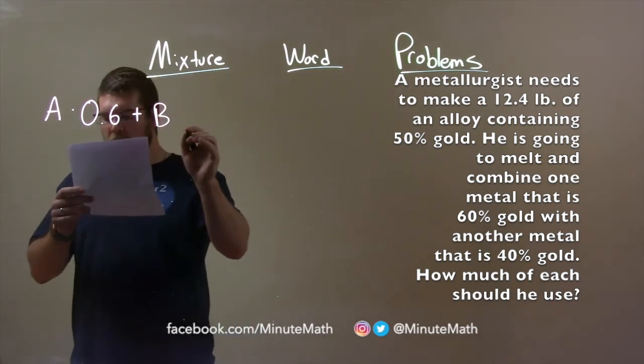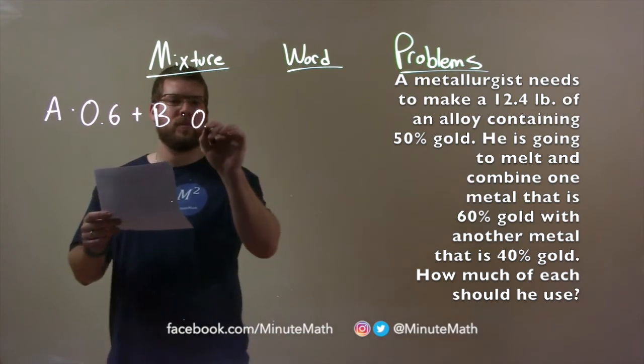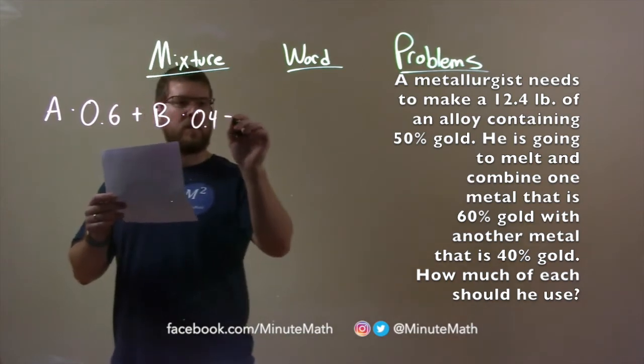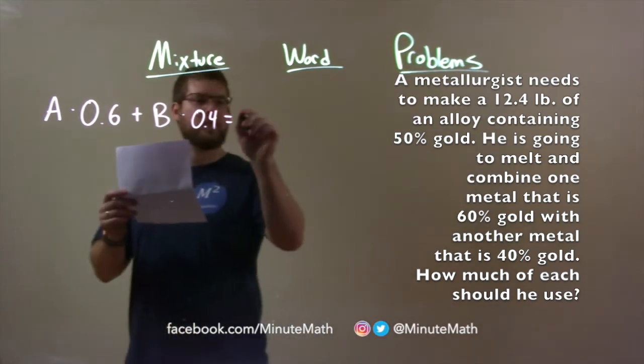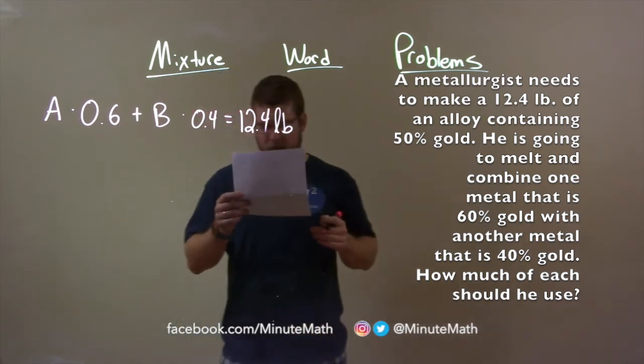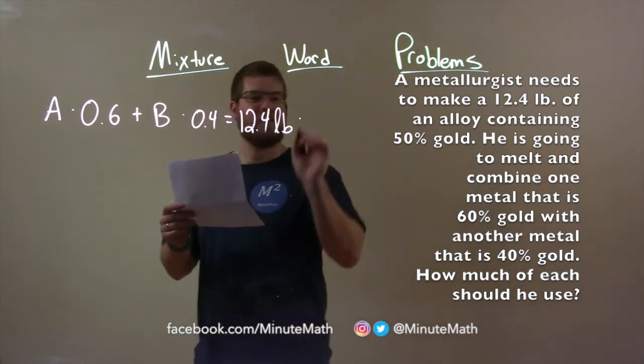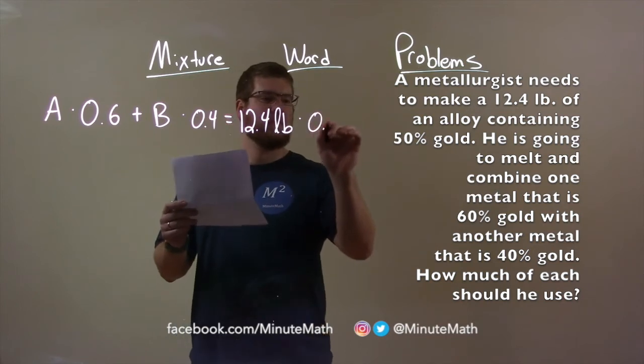So as a decimal, 0.4. That combination, we need to make a total amount of 12.4 pounds, and that final amount needs to contain 50% gold. So, as a decimal, 0.50.